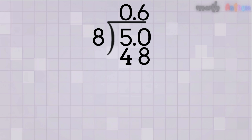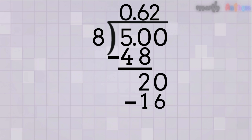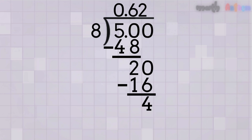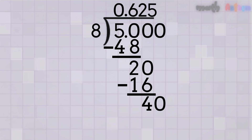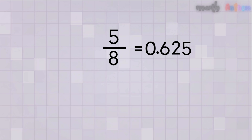Subtract: 50 minus 48 equals 2 — still got a remainder, keep going. Bring down another 0 next to the 2, making the new number 20. How many times does 8 go into 20? That's 2 times, because 8 times 2 equals 16. Write 2 in the quotient. Subtract: 20 minus 16 equals 4 — still not done. Bring down another 0 next to the 4, making 40. How many times does 8 go into 40? That's 5 times, because 8 times 5 equals 40. Write 5 in the quotient. Subtract: 40 minus 40 equals 0 — no remainder, we're done! So 5-eighths as a decimal is 0.625.